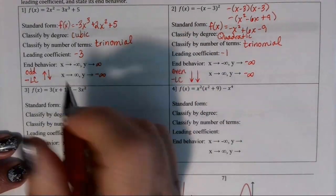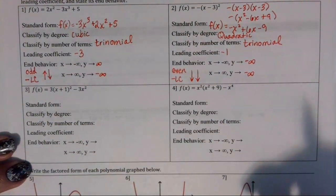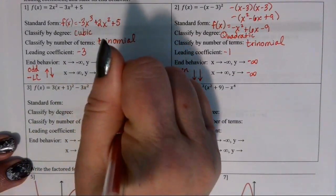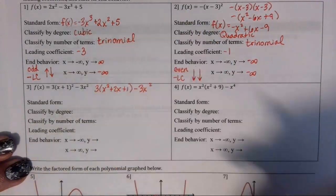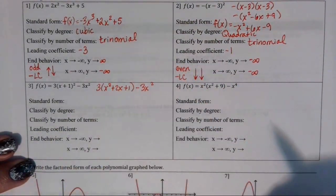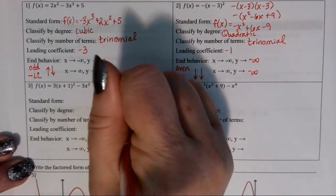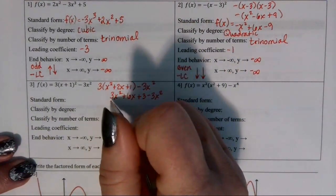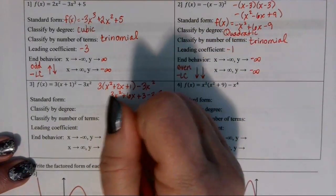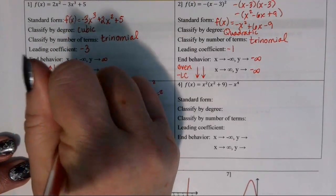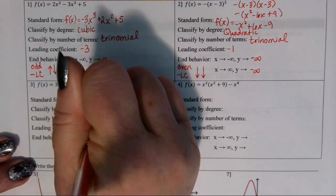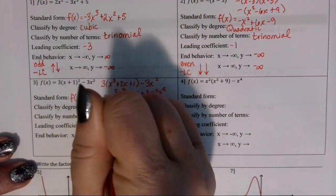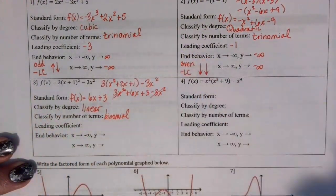In number 3, we again need to expand the binomial being squared — that's a perfect square trinomial, giving x squared plus 2x plus 1 — and then minus 3x squared. We distribute the 3 over the parentheses to get 3x squared plus 6x plus 3 minus 3x squared. The positive 3x squared and negative 3x squared cancel when we combine like terms, so our standard form is 6x plus 3.